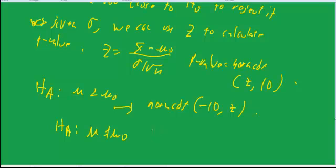So if X-bar is greater than mu-naught, then we take the normcdf from Z to 10, and then multiply it by two to get the p-value. Okay, so that's with a Z.